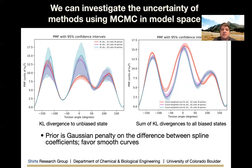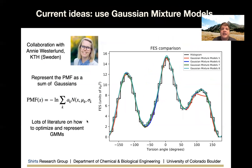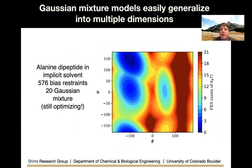We use a prior that's a Gaussian penalty on the difference between spline coefficients, favoring smooth curves. An idea we're exploring now, in collaboration with graduate student Annie Westerlund at KTH in Sweden, is to use a Gaussian mixture model — representing the potential of mean force as a sum of Gaussians. There's extensive literature on optimizing Gaussian mixture models, and we're getting very promising results. Splines don't work well in 2D, but Gaussian mixture models do, so this should extend to two-dimensional free energy surfaces relatively easily.